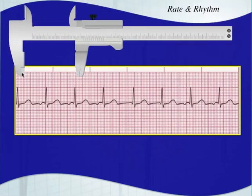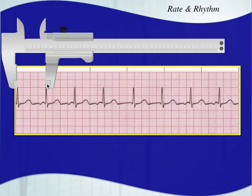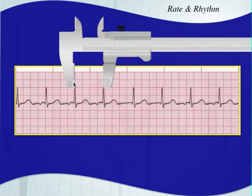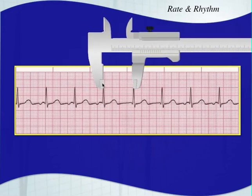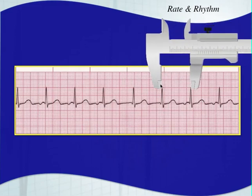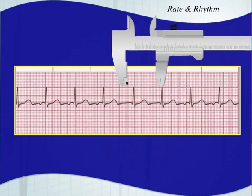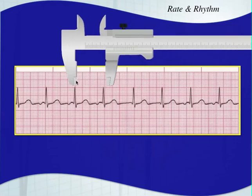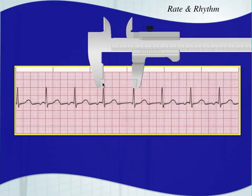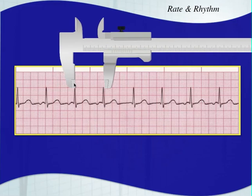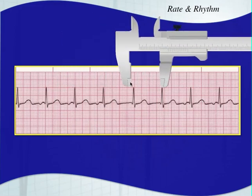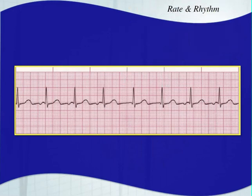Let's look at the next one and first see if it's regular. Measuring those QRS complexes — looks the same, looks the same, also looks the same. Very, very regular — though there might be a slight irregularity there. Double-checking doesn't hurt: very regular with a slight irregularity, so we'd call this rhythm irregular. Counting on this six-second strip: one, two, three, four, five, six, seven, eight beats. Eight times ten gives a heart rate of 80.